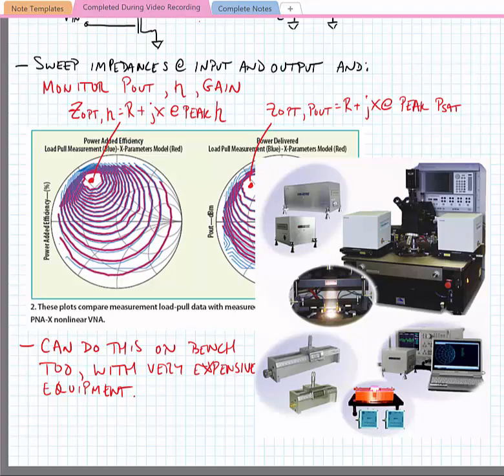We can find the source impedances that provide us better performance, and we can also do this on the bench top with very expensive equipment. This will stop this lecture. At the next lecture, we're going to look at improving the efficiency by changing the bias point of the power amplifier.